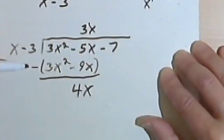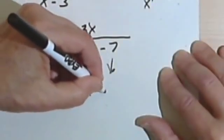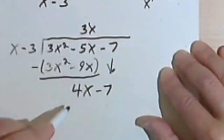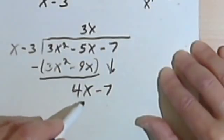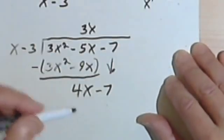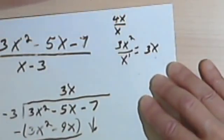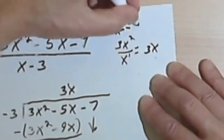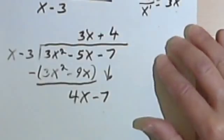Now, as in regular long division, I'm going to bring down my next number, or my next term. So this is 4x - 7. And I'm going to divide that by the first term here. I'm going to divide the x, the first term, into the first term down here. So x divided into 4x, which is the same as saying 4x over x. The x's will cancel and I'll just have a 4. So this is going to be +4.